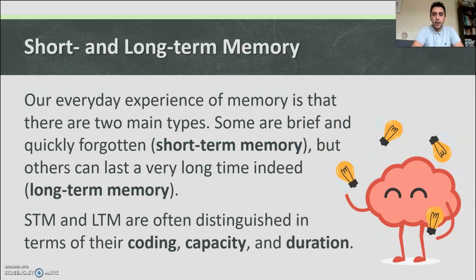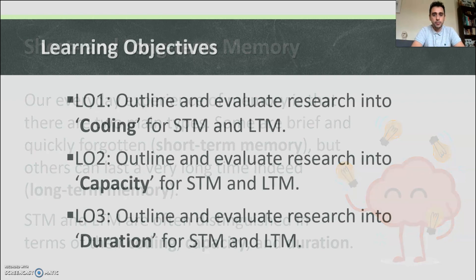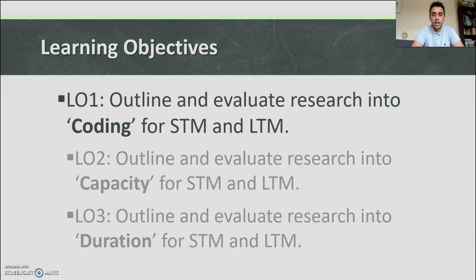Our everyday experience of memory is that there are two main types. Some are brief and are quickly forgotten — short-term memory — but others can last a very long time indeed — long-term memory. Short-term and long-term memory are often distinguished in terms of their coding, capacity and duration. We're going to outline and evaluate research into coding, capacity and duration for both short-term and long-term memory today.